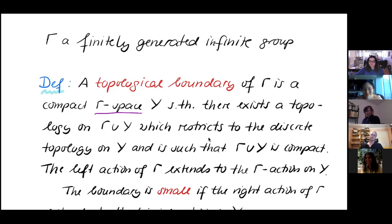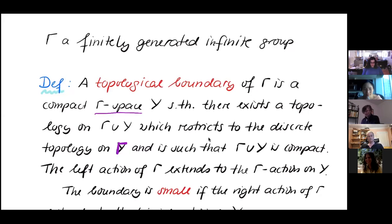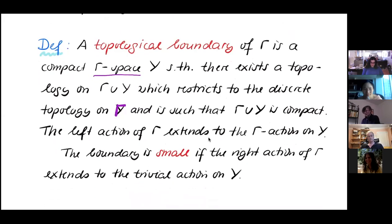There exists a compact gamma space Y, and furthermore we require that there exists a topology on the union of gamma with Y, which restricts to the discrete topology on gamma, and is such that gamma union Y is compact. Gamma is a discrete infinite group, so it is by no means compact, but we want the union of gamma and Y to be compact. Then the left action of gamma is supposed to extend to the given gamma action on the compact space Y.